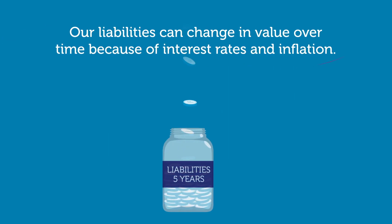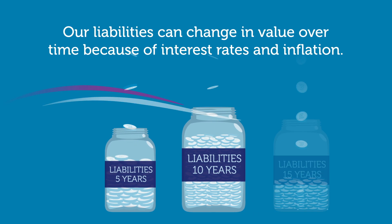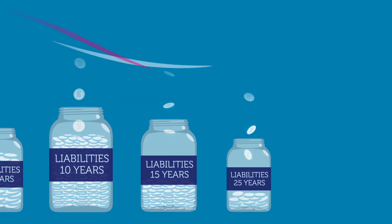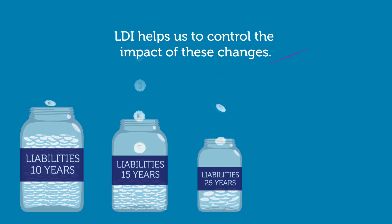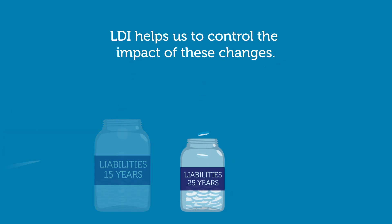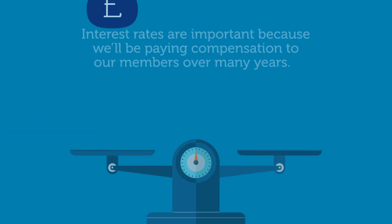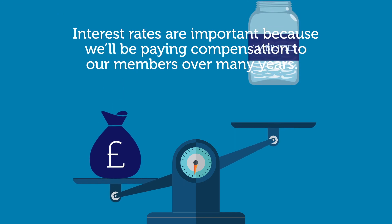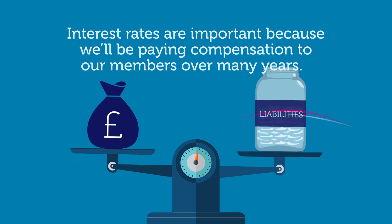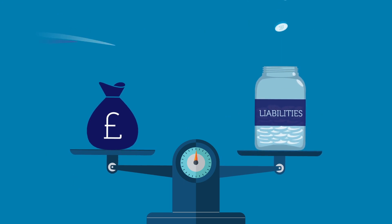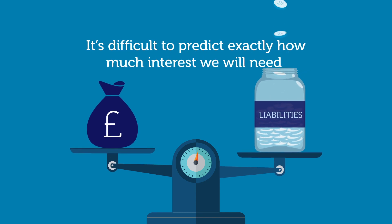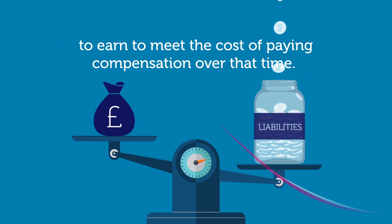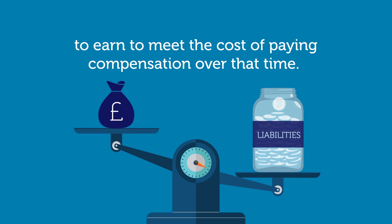Our liabilities can change in value over time because of interest rates and inflation. LDI helps us to control the impact of these changes. Interest rates are important because we'll be paying compensation to our members over many years, and it's difficult to predict exactly how much interest we will need to earn to meet the cost of paying compensation over that time.